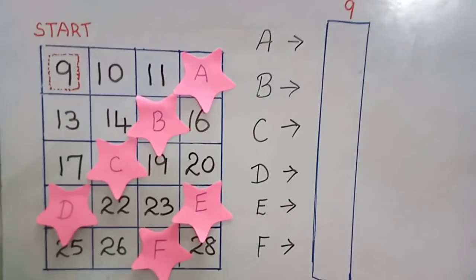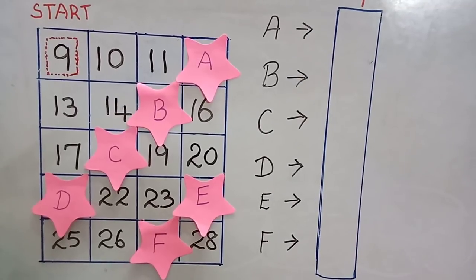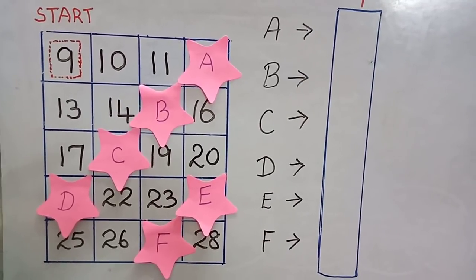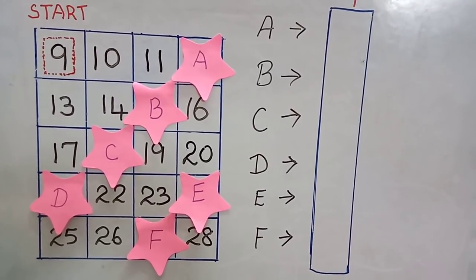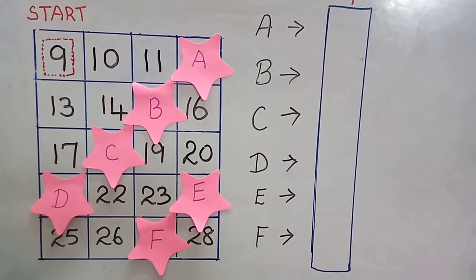Good day children, here you can see an enlarged number chart and the number chart begins with 9. If you notice, you can see some of the numbers have been missing and these numbers are replaced by alphabets.